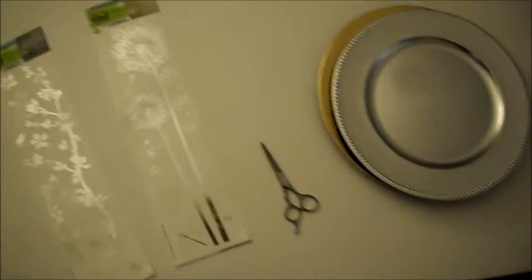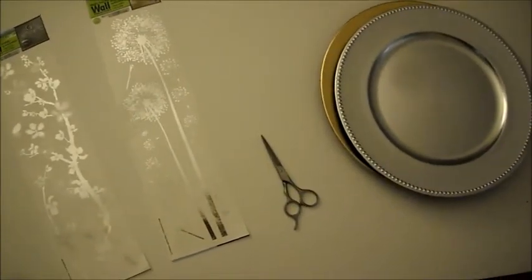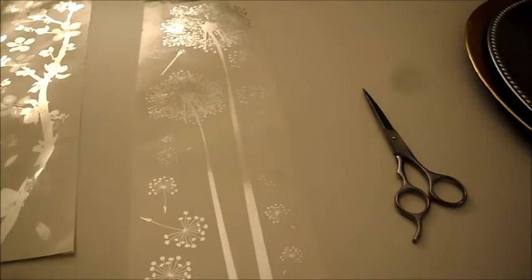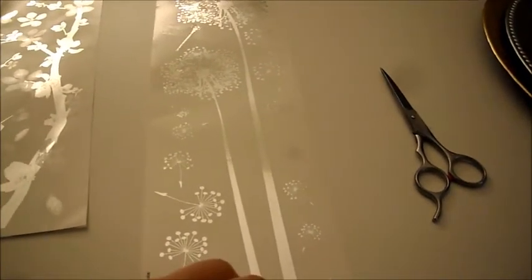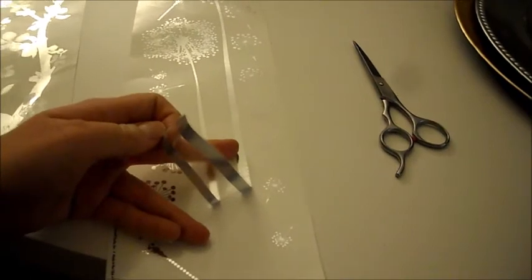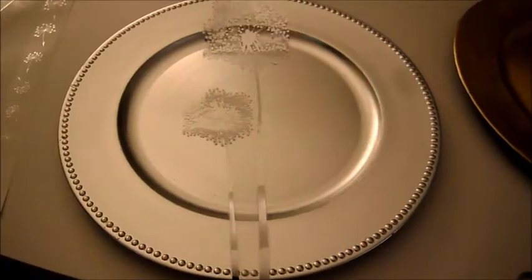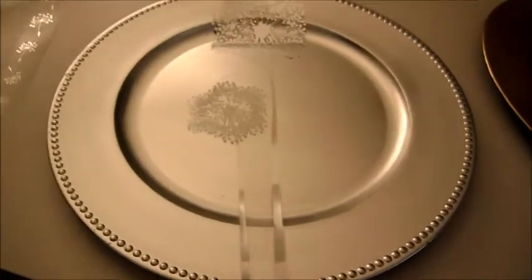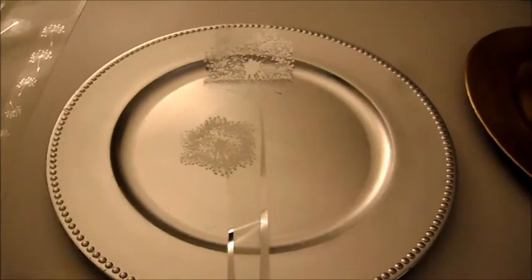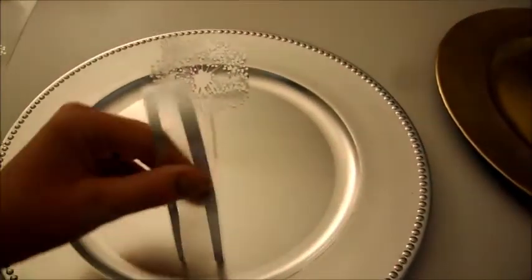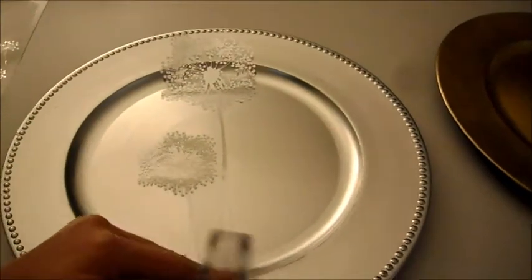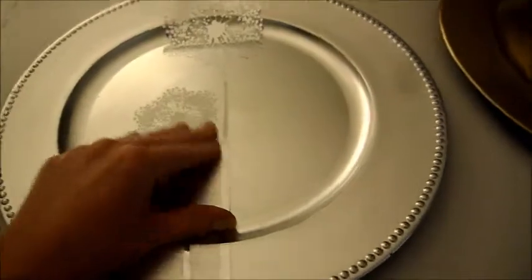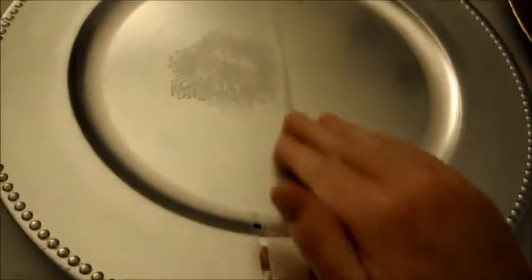You have your plates, your stickers, and all you need is a pair of scissors. We're going to start by peeling off the sticker, and then you're going to place it like so on the plate. You want to press it down to make sure there's no air bubbles and that it's all sealed tightly on the plate.